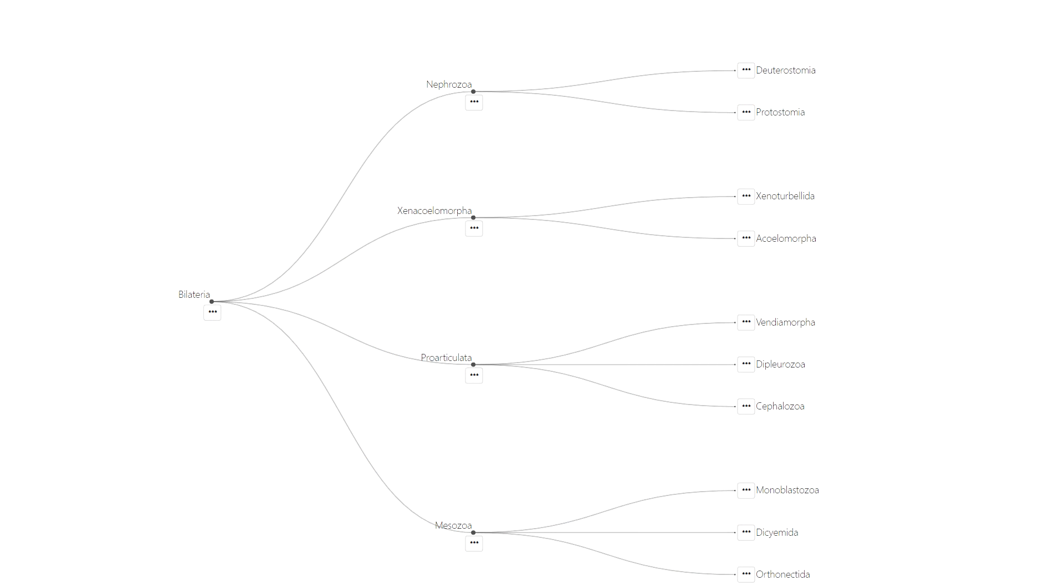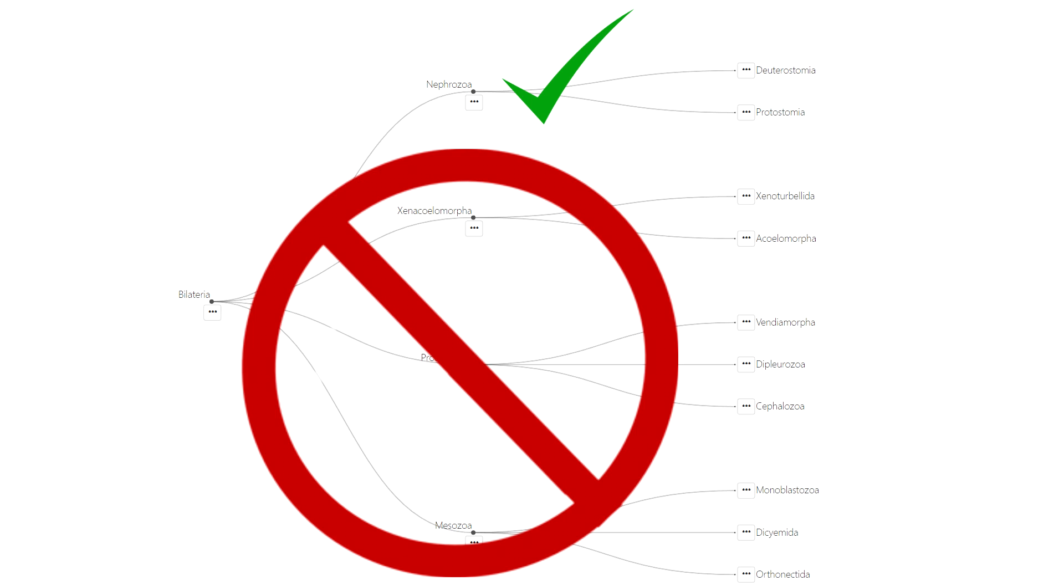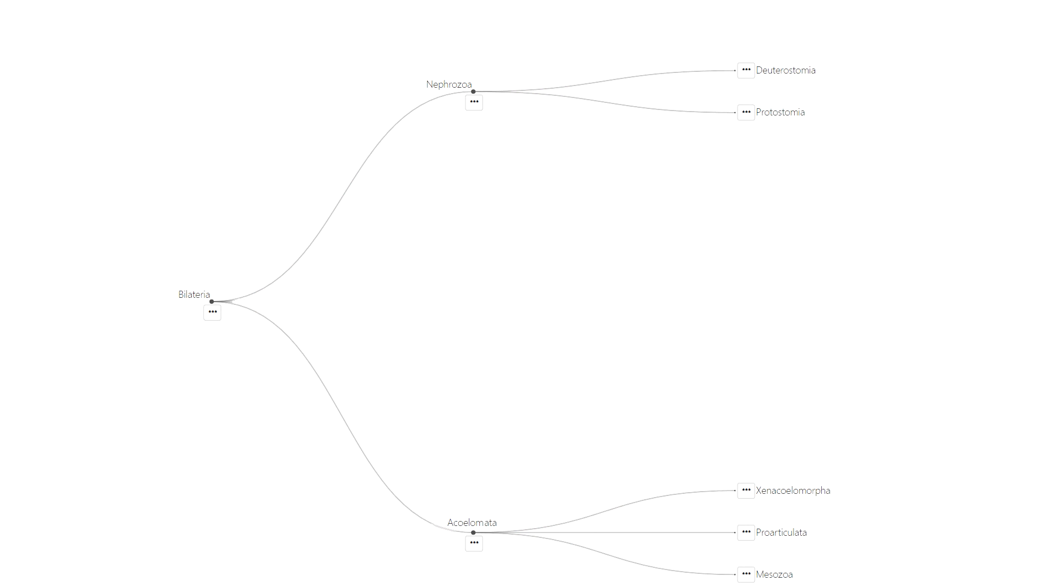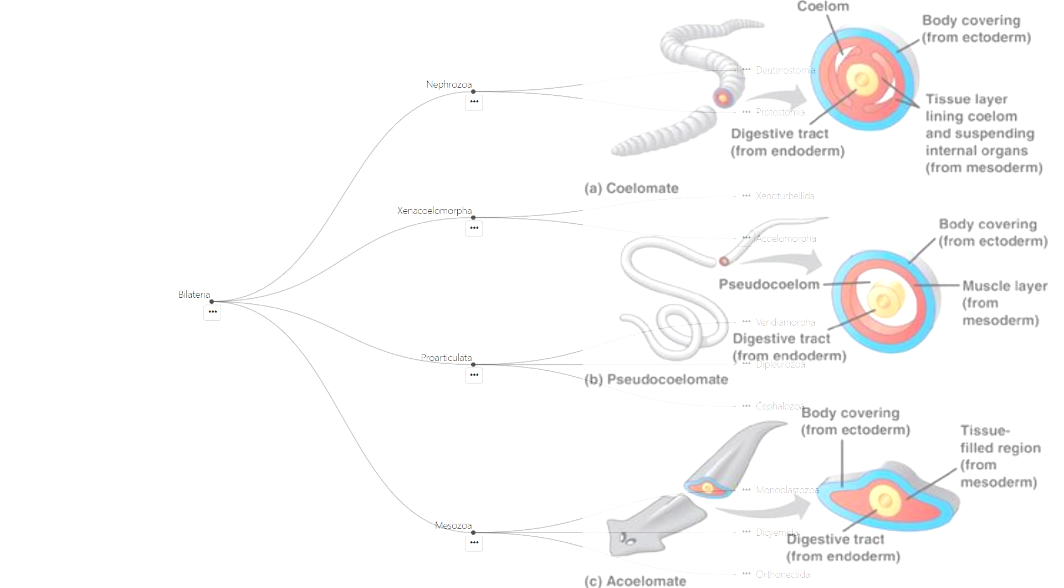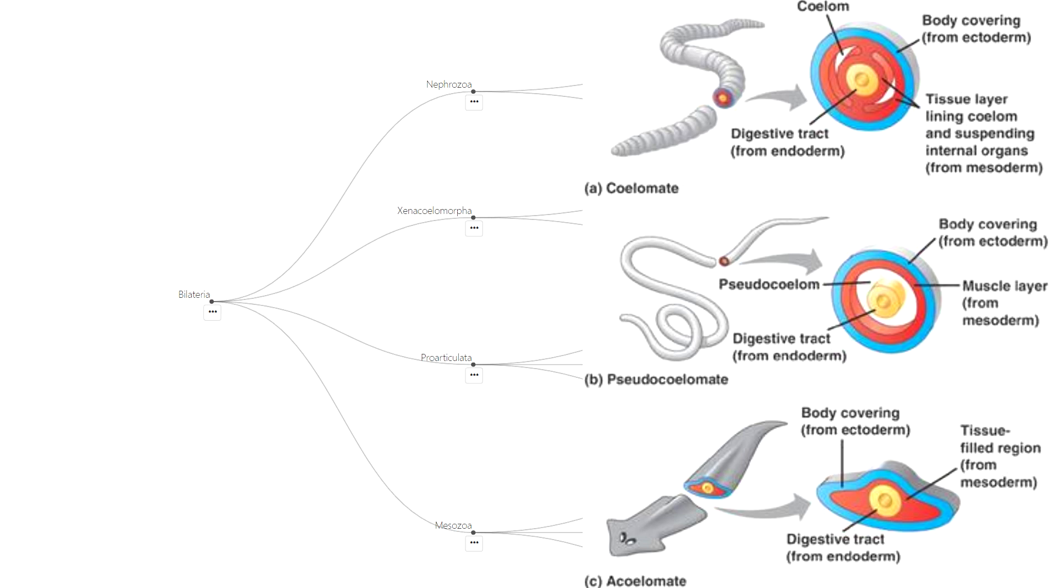Otherwise, all of bilateria can be divided into two groups based on a body cavity or lack thereof. It's tempting to group all three of these as acoelomes, but that's not an actual taxon. Acoelomes have no body cavity between the digestive tract and the outer body wall. All other animals have some sort of body cavity which joins a mouth of some kind at one end and an anus at the other.